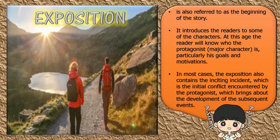Let us start at the beginning part of Freytag's Pyramid, which is called exposition. Exposition is also referred to as the beginning of the story. It introduces the readers to the characters. At this stage, the reader will know who the protagonist, or major character, is — particularly his goals and motivations. In most cases, the exposition also contains the inciting incident, which is the initial conflict encountered by the protagonist.